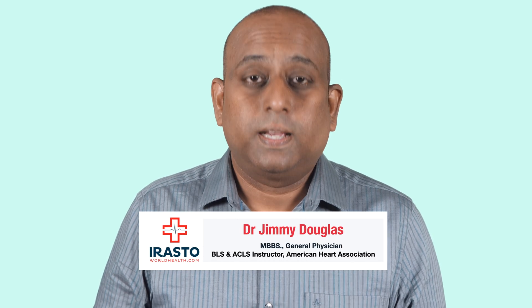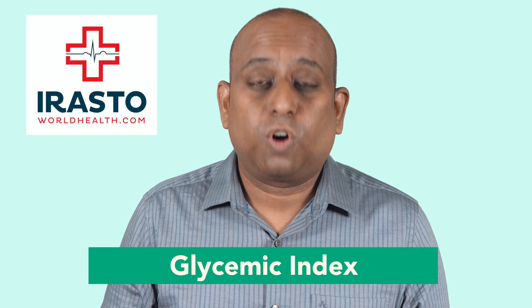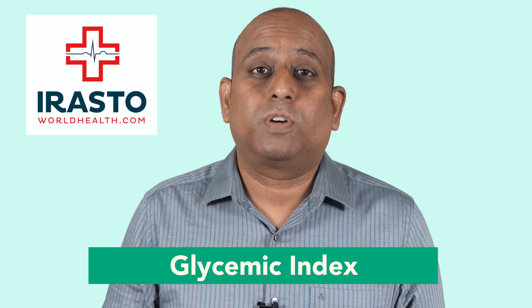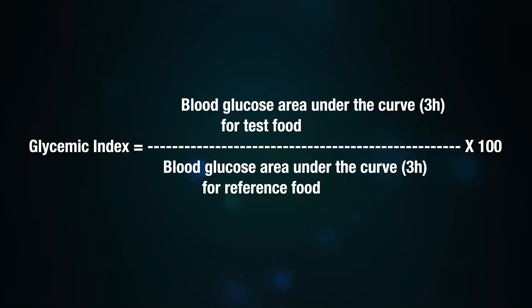Hello, I'm Dr. Jimmy Douglas. Today we'll see the difference between glycemic index and glycemic load. Glycemic index is a measure of how fast a food raises your blood glucose level. The glycemic index of a carbohydrate-containing food is determined by comparing the glucose excursions, or fluctuations of blood glucose levels, after consuming 50 grams of a test food with glucose excursions.